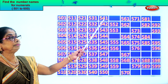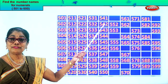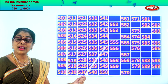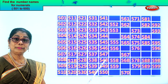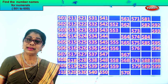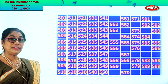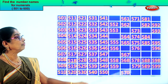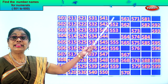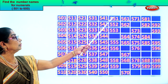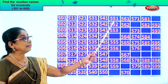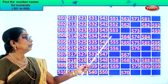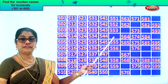Let's say together: 550. After 50 comes 51, so 551. 552. 553. After 53 comes 54. 554.